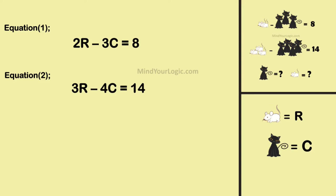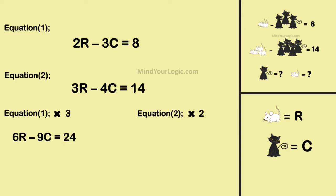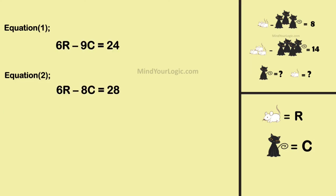Multiply equation one by 3 and multiply equation two by 2. We get equation one as 6r minus 9c equals 24, and equation two as 6r minus 8c equals 28.